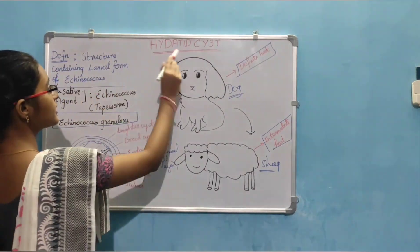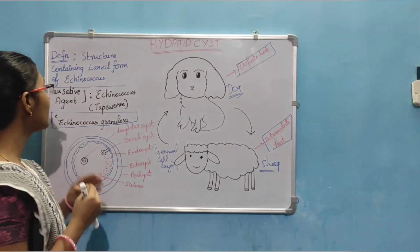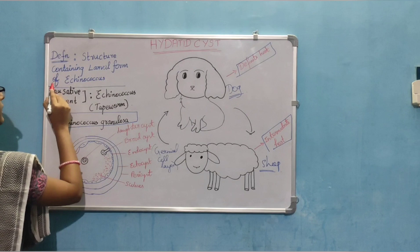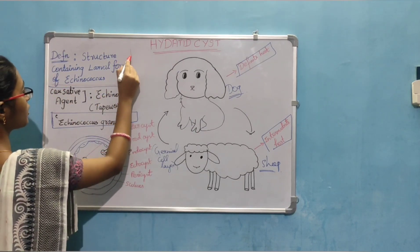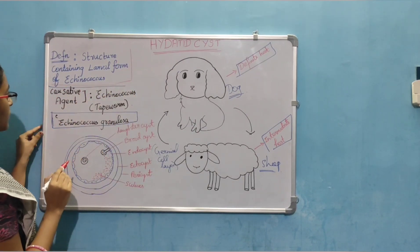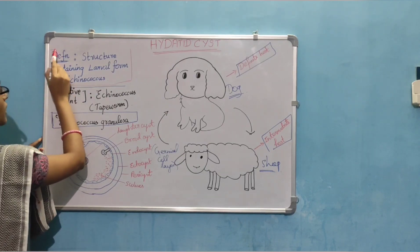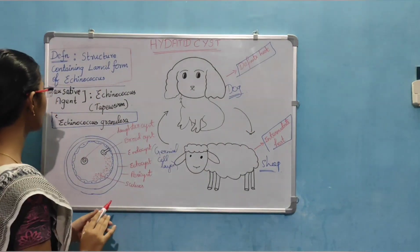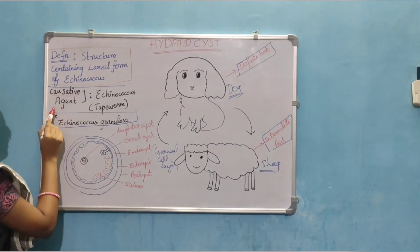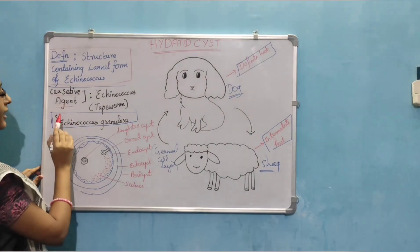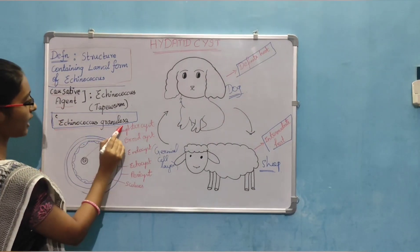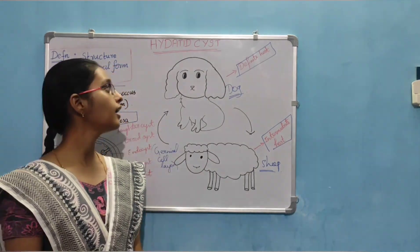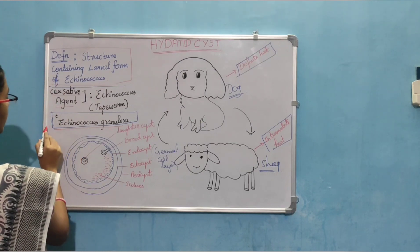So hydatid cyst. Definition of hydatid cyst: it is a structure that contains larval form of echinococcus. We know that echinococcus is a tapeworm. So the causative agent of hydatid cyst is echinococcus granulosa. Echinococcus granulosa is a tapeworm which is the causative agent for hydatid cyst.